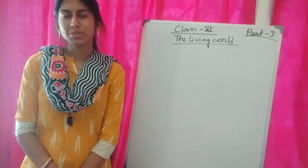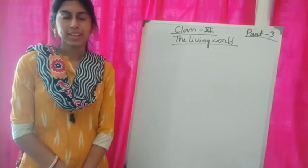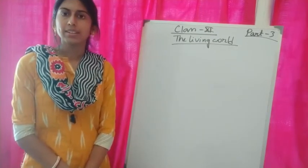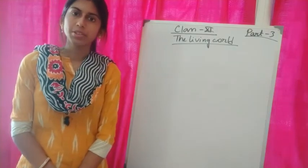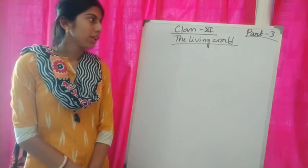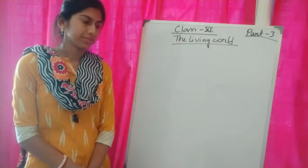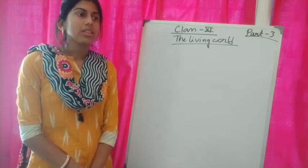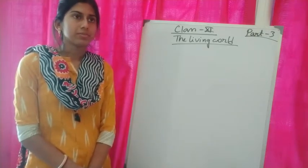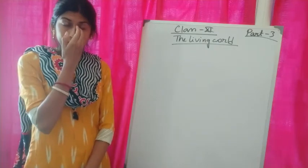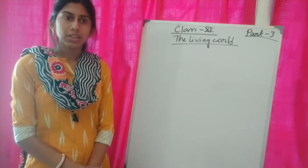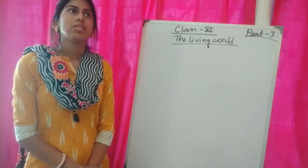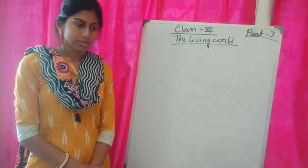Good morning, dear students of class 11. In our previous two classes, we have started the first chapter of your biology book, that is the living world. Today we will continue the chapter. In our previous classes, we have completed taxonomy, different characteristics of living organisms, binomial nomenclature, and different criteria of nomenclature.